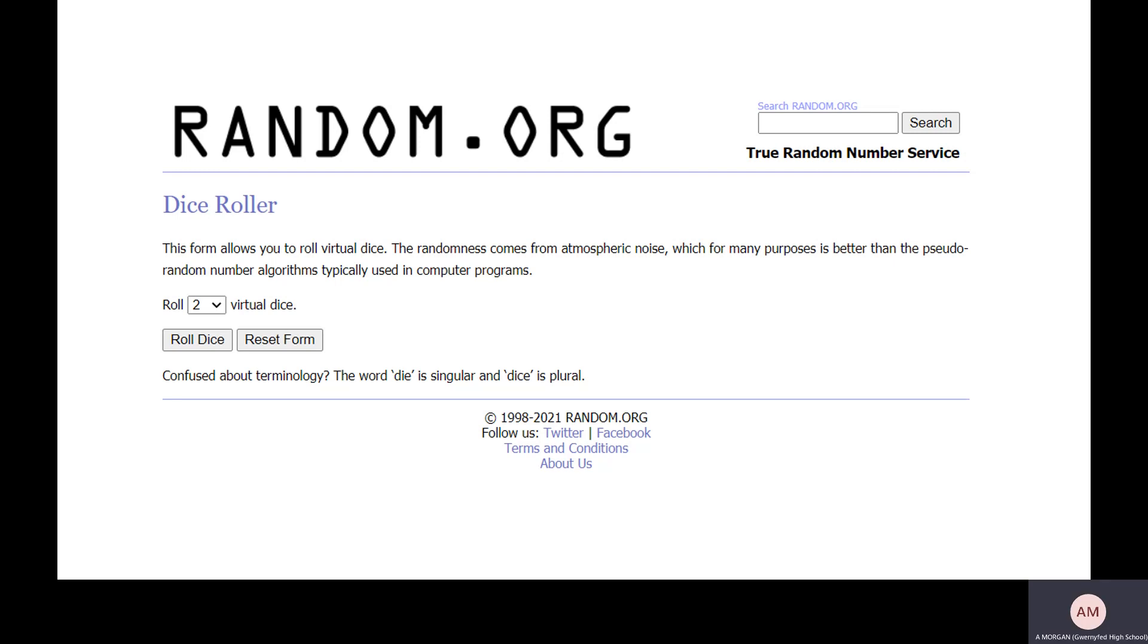Okay, so today we're going to look at experimental probability. Now, you can imagine rolling a dice and you've got, in theory, one in six chance of getting each number.